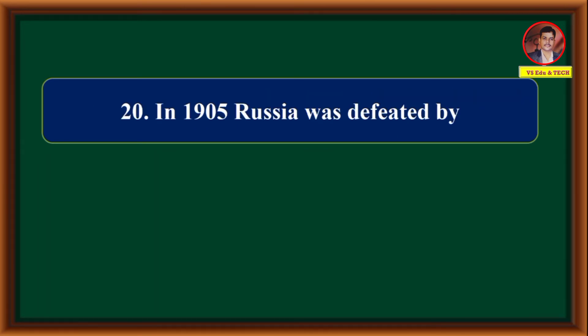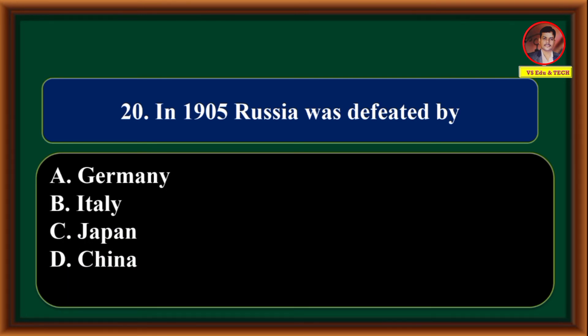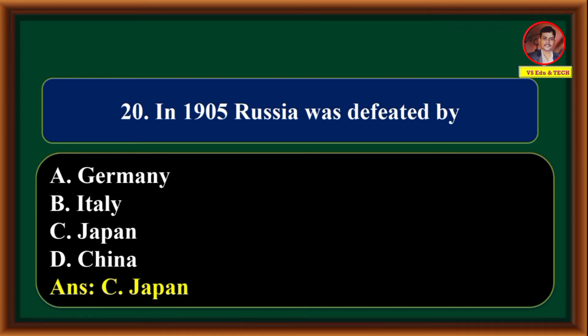In 1905, Russia was defeated by — Germany, Italy, Japan, China. Correct answer is option C: Japan.